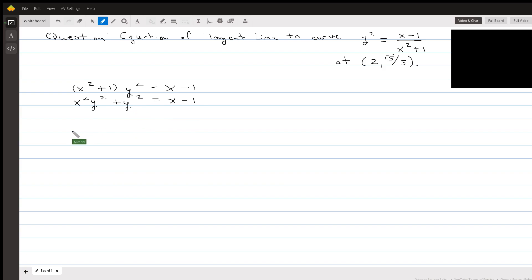And now differentiating implicitly, I'm going to get x squared times 2yy prime, plus, finish the product rule, 2xy squared. Next term, 2yy prime equals 1.